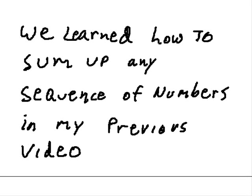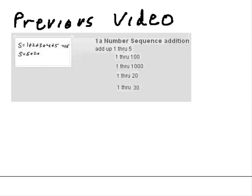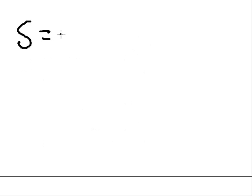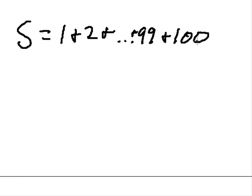We learned how to sum up any sequence of numbers in my previous video. But now we want to generalize sequence addition. Before we said that S was equal to 1 plus 2 plus dot dot dot 99 plus 100. Then we're adding up a sequence of numbers from 1 to 100.